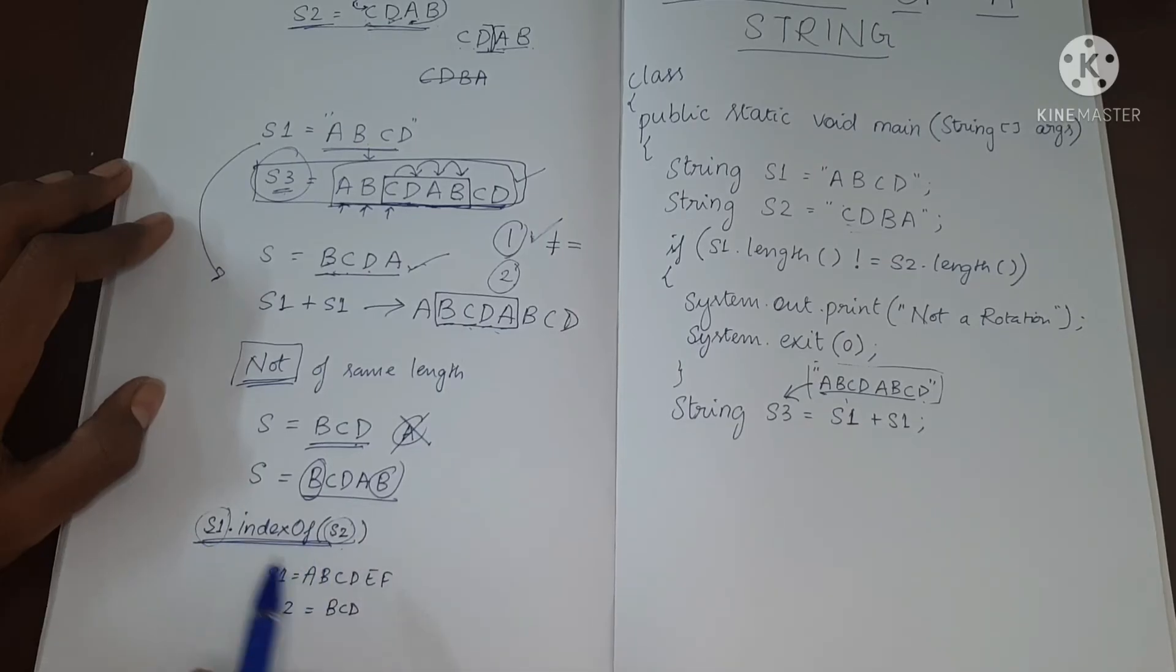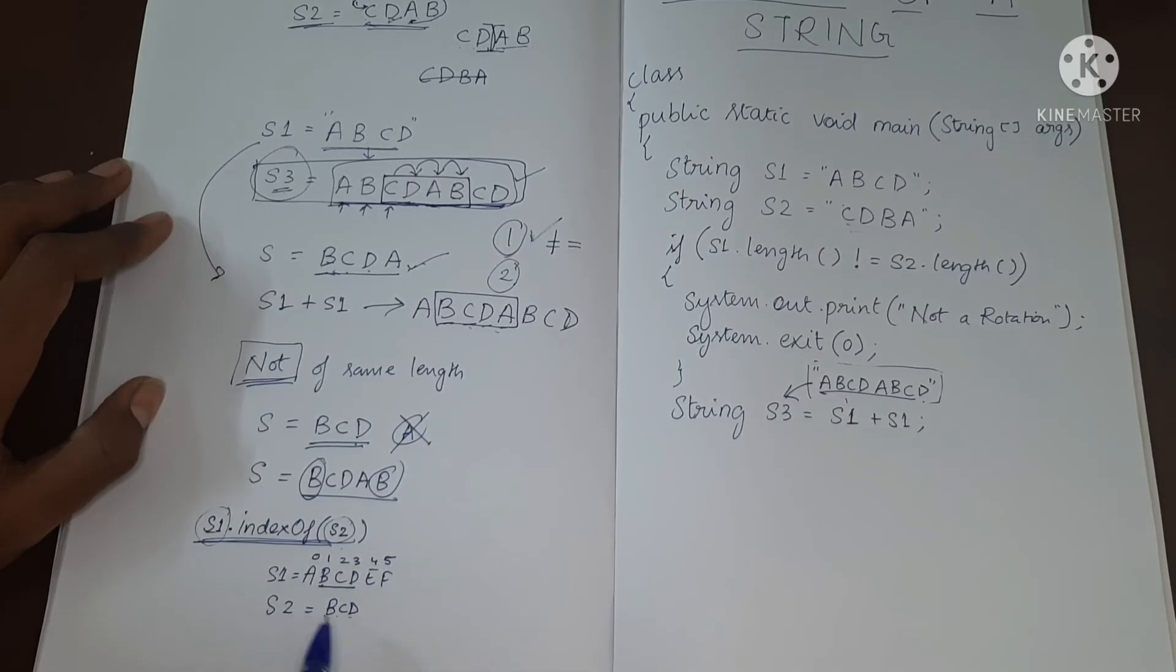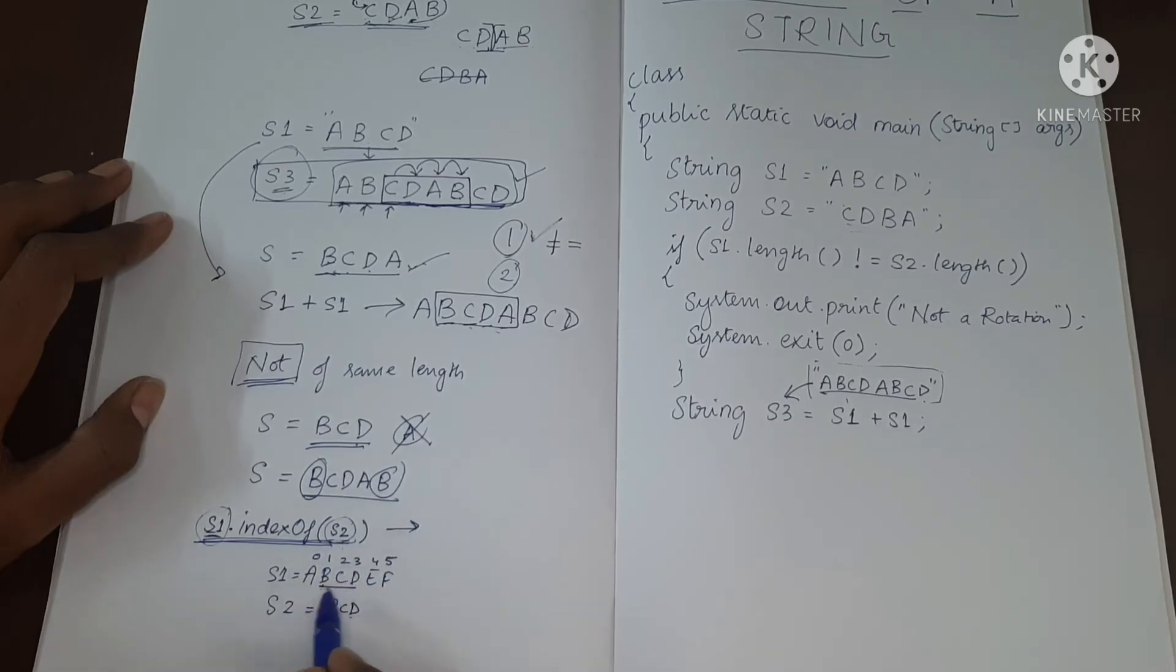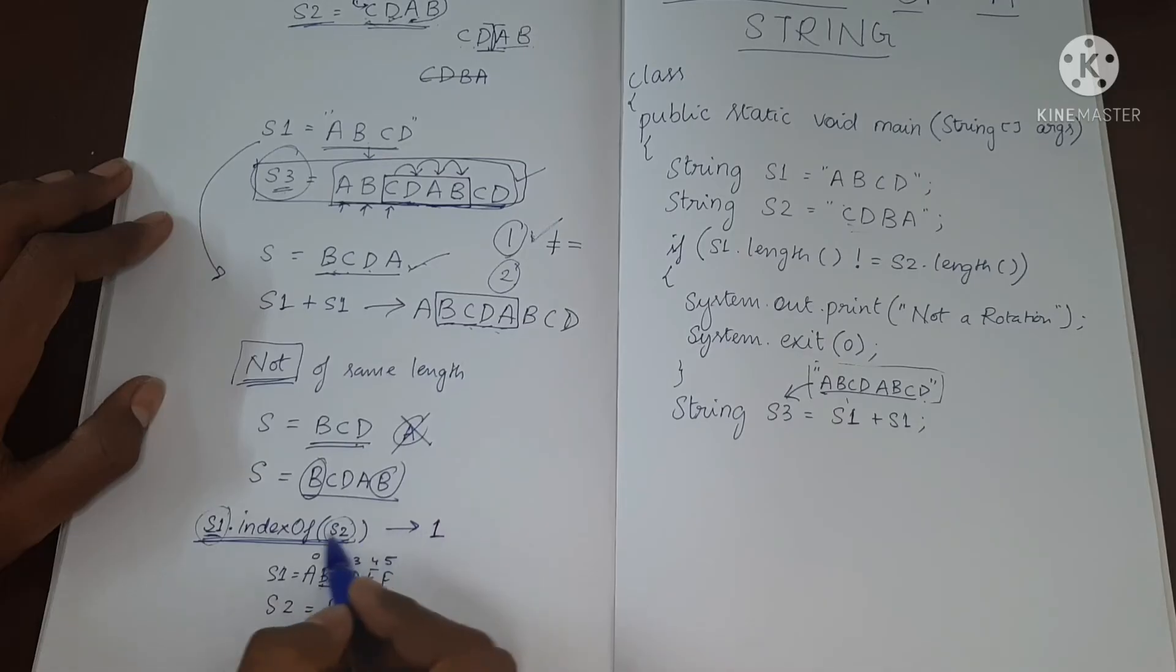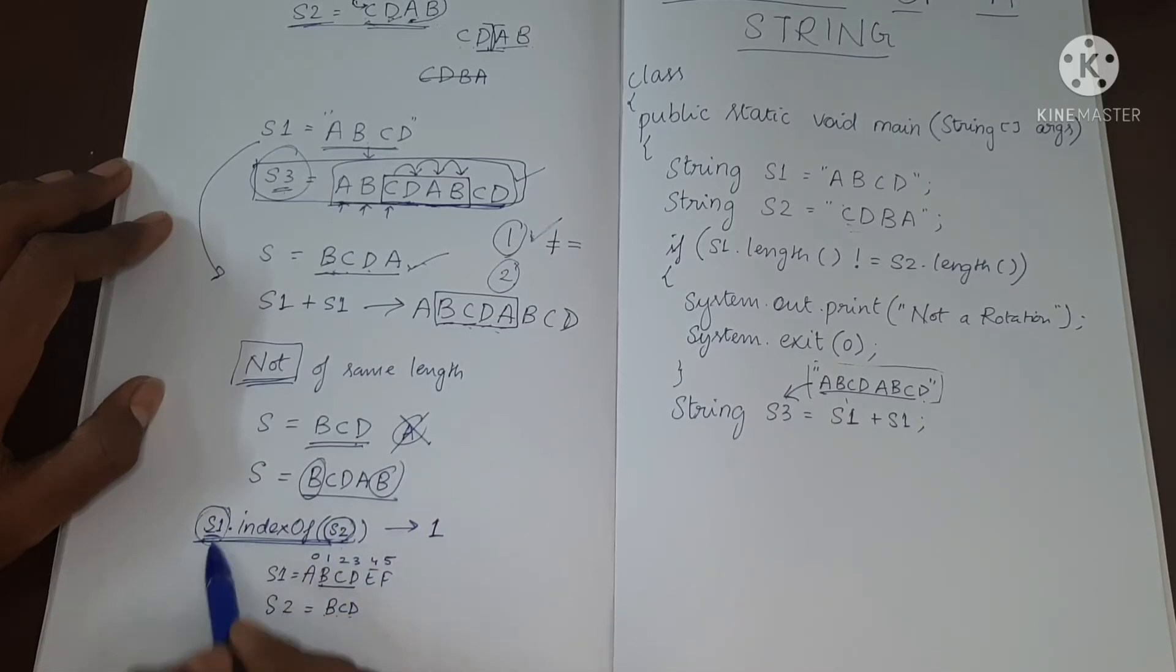What is the index location of this? This is A at index number zero, this is one, this is two, this is three, four and five. So where is B, C, D present? Where is this S2 present in S1? It is present in index number one. So this will give us the index of where this string is present in this string.